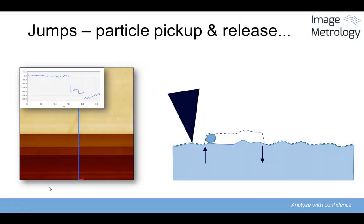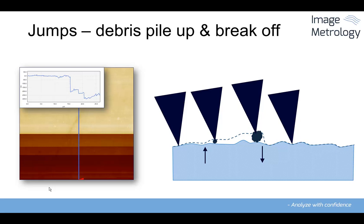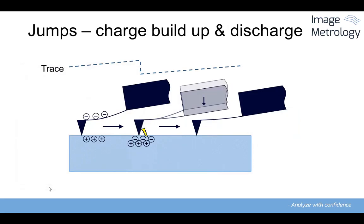Jumps are most often caused by pickup and release of particles or debris. They can also be caused by electrostatic discharges or instabilities in mechanics, electronics or in the sample.